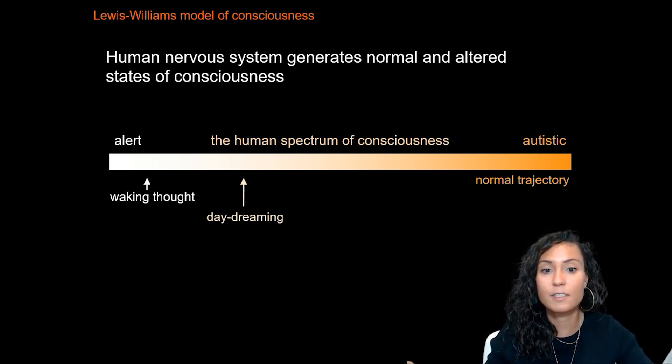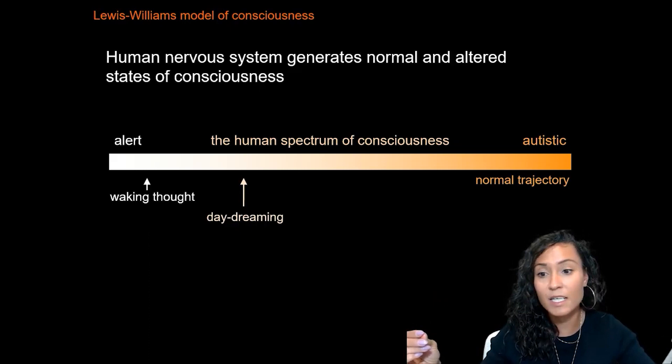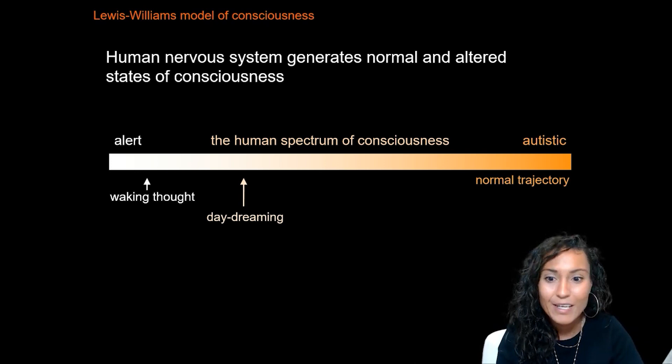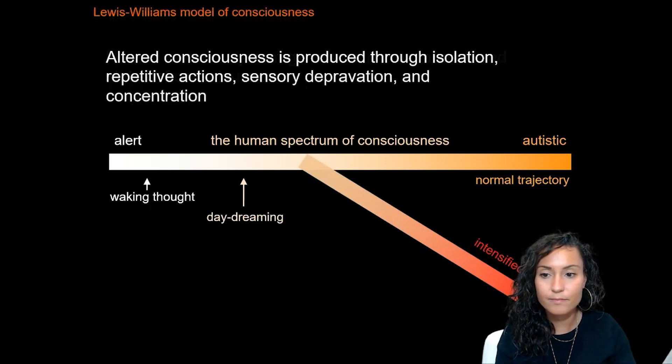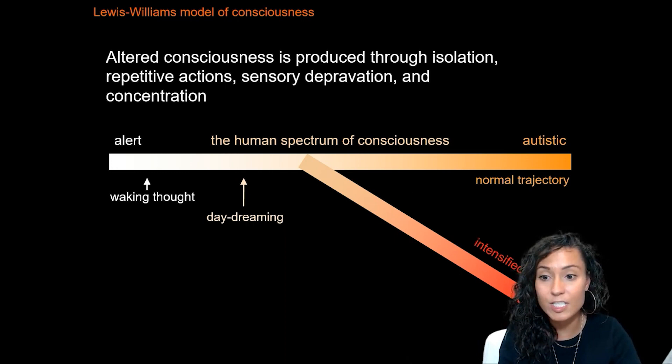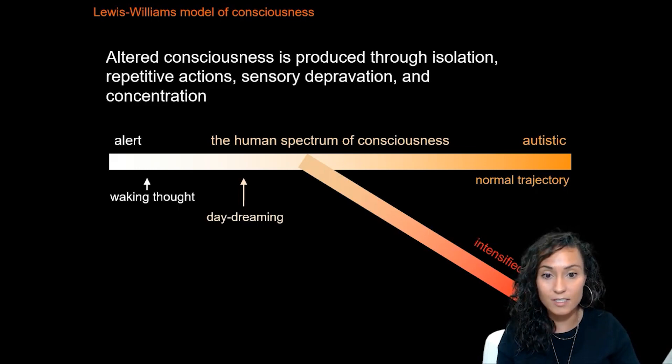Lewis-Williams' model places human consciousness on a spectrum from alert to autistic — think basically asleep. Along this spectrum, the human nervous system generates normal consciousness, what we experience watching this video, as well as altered states of consciousness. Altered states are produced through isolation, rhythmic repetitive movements and chanting, intense concentration, and oxygen deprivation, which produces hallucinations.